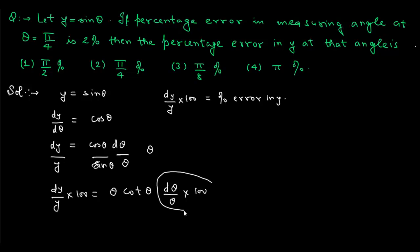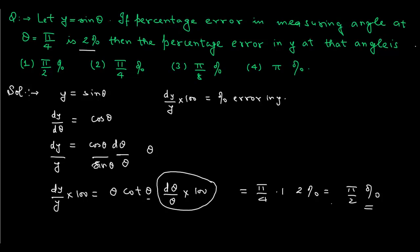The percentage error in the measurement of angle θ is given as 2%. θ is defined at π/4, where we calculate the percentage error in y. At θ = π/4, cot θ = 1. So the percentage error in y = cot(π/4) × 2% = 1 × 2% = π/2 percent. So the first option is the correct answer.